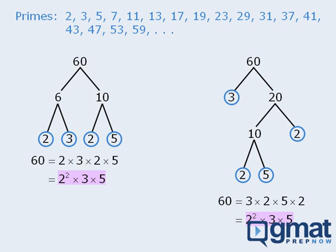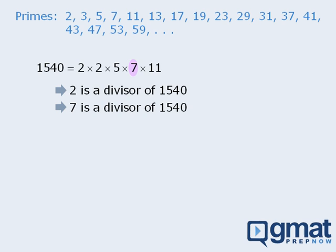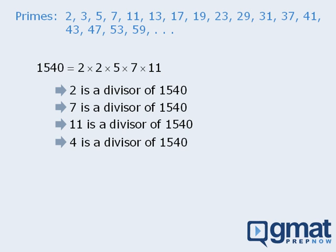You might be wondering how prime factorization helps us tackle integer property questions. The prime factorization of a number tells us a lot about that number's divisors. For example, from the prime factorization of 1540, we can see that 2 must be a divisor, because the prime factorization contains a 2, meaning 1540 equals 2 times some number. Similarly, 7 and 11 are also divisors. Also, 4 is a divisor of 1540 — there may not be an actual 4, but if we recognize that 4 equals 2 times 2, we can see that 4 is hiding as 2 times 2 within the factorization.